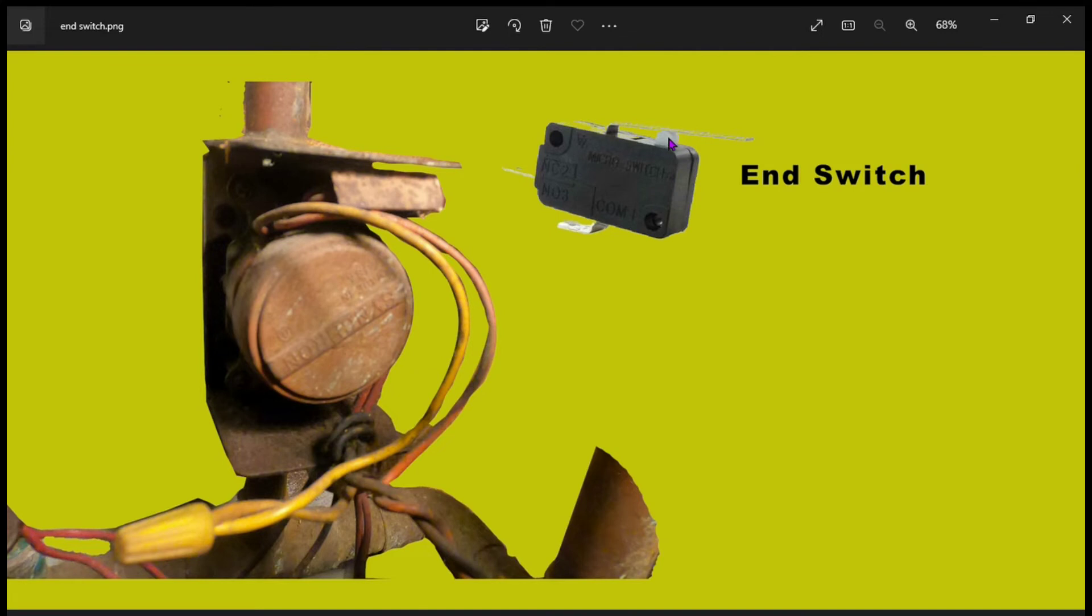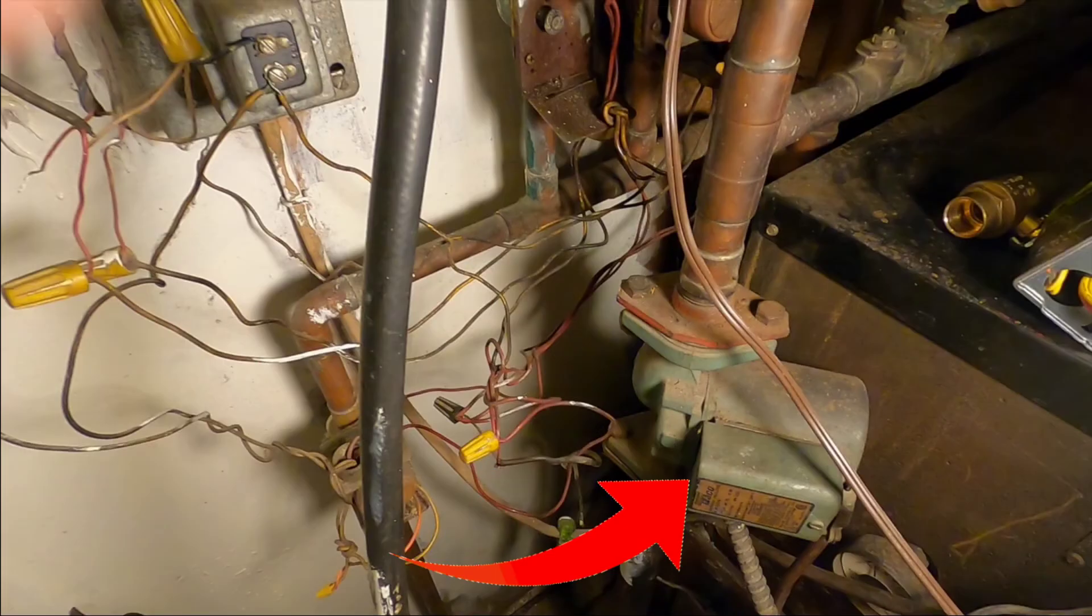This little button over here gets pushed down and the two wires that are connected to it go to the aquostat. Then that aquostat will power the circulator pump which will push the water through the system.